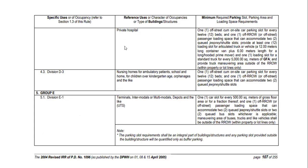For private hospitals, that's one off-street on-site car parking slot for every 12 beds, plus one off-road right-of-way off-street passenger loading space accommodating two queued jeepney/shuttle slots. Provide at least one loading slot for an articulated truck — a 12-meter-long container — plus one 6-meter length slot for a long-wheeled prime mover, and one loading slot for a standard truck for every 5,000 square meters of gross floor area.